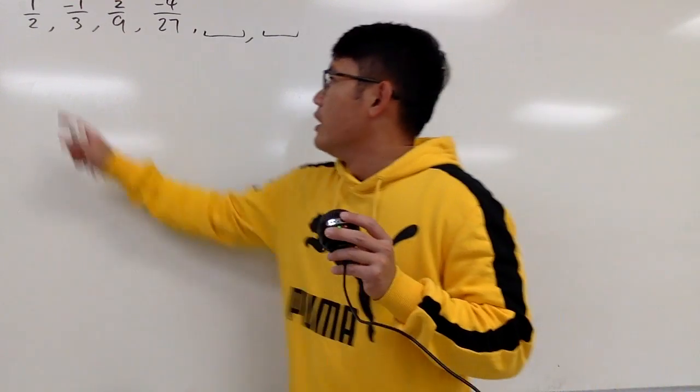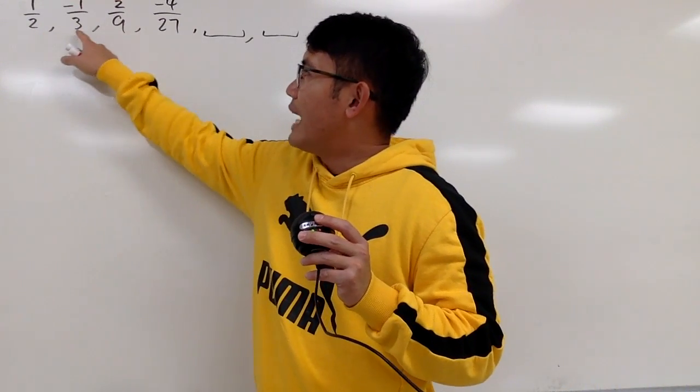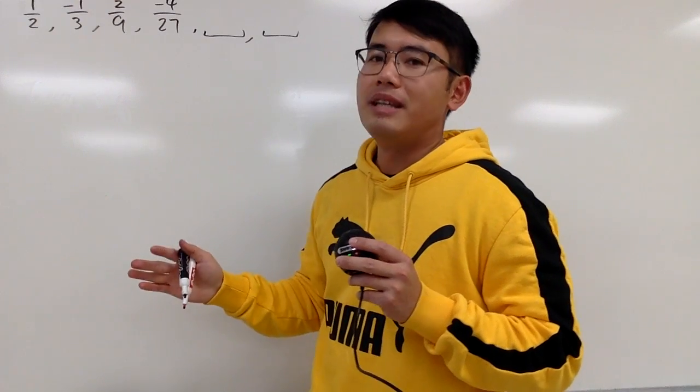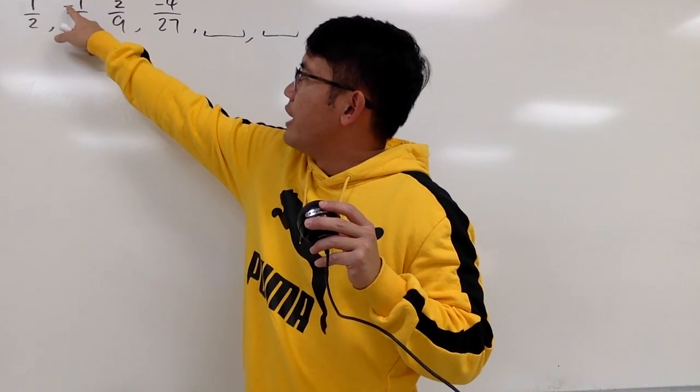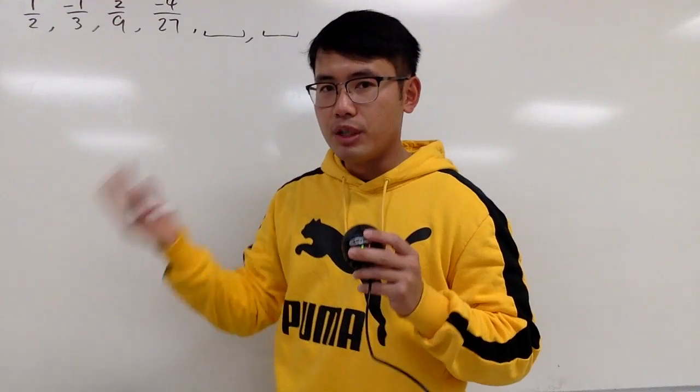Alright, so here we go. If you look from 1/2 to -1/3, it might not be too easy to see what's going on, but if you go from here to here, you can see that from -1 to 2, you can just multiply by -2. And for the bottom, you can just multiply 3 by 3, and you get 9.